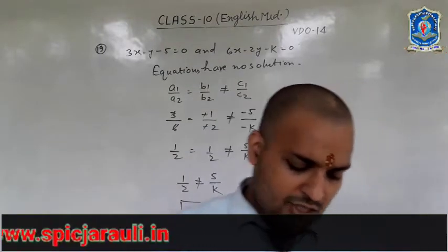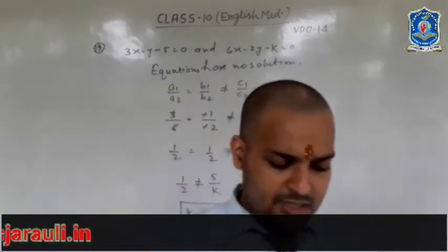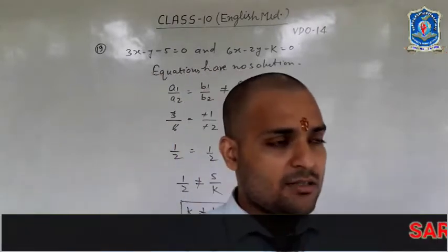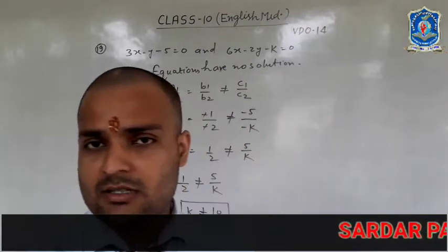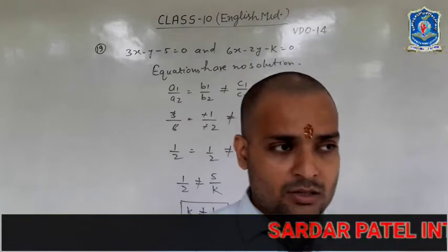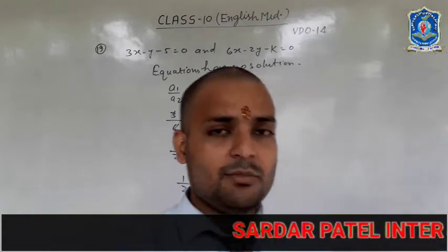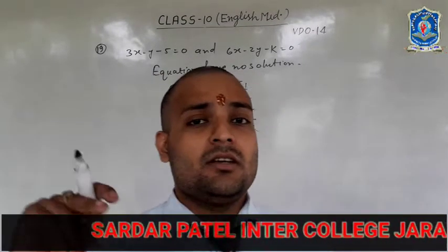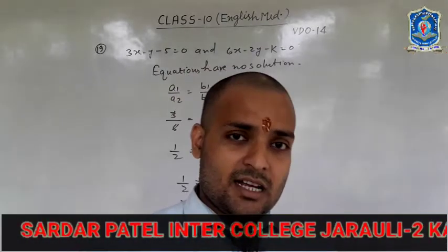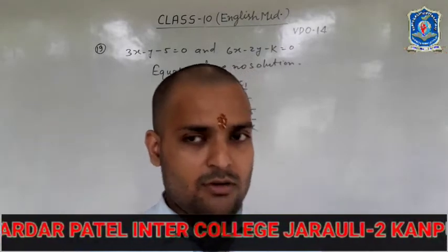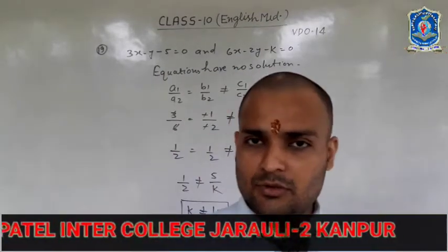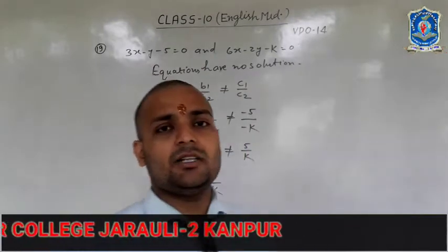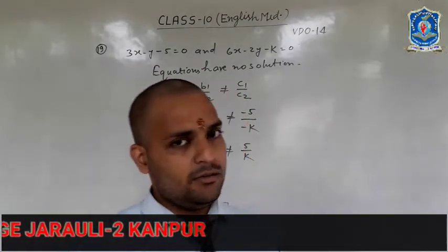For question number 20, find the value of K for which the system of equations has a unique solution. The condition for a unique solution is that A1/A2 does not equal B1/B2. So the answer will be in the form of 'does not equal.' If your answer comes out as equal, then that answer is wrong.